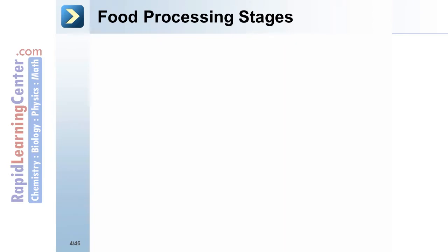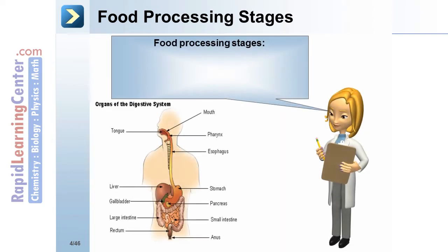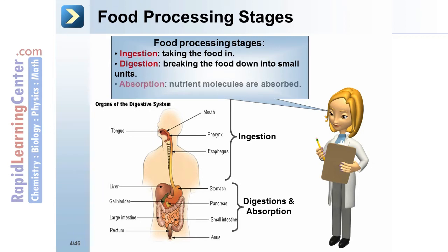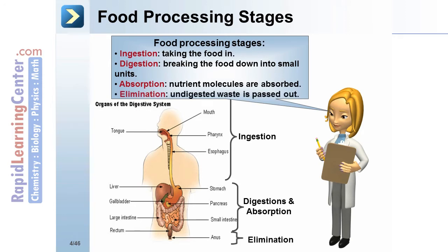Food processing stages and organs of the digestive system: ingestion — taking the food in; notice the organs involved. Digestion — breaking the food down into small units; refer to the organs of the digestive system to see which ones are involved in breaking the food down. Absorption — nutrient molecules are absorbed. Elimination — undigested waste is passed out.